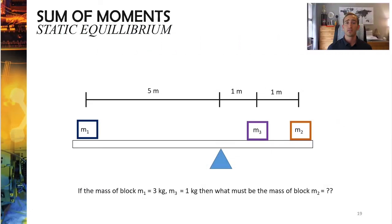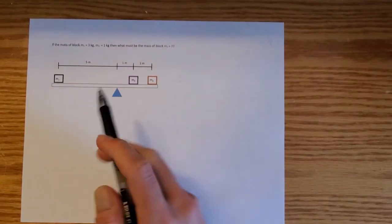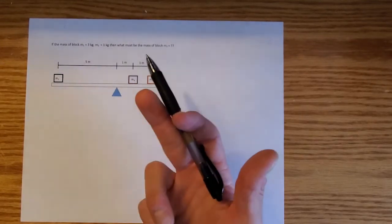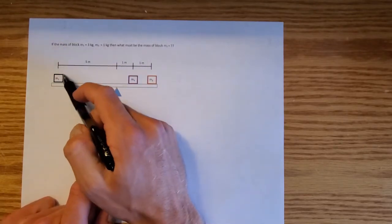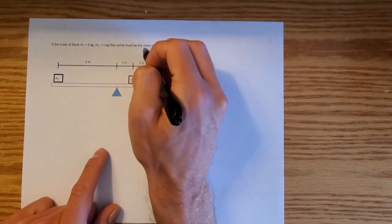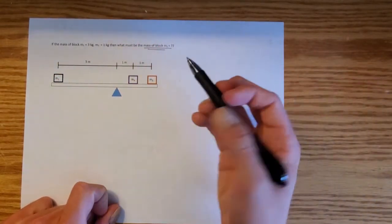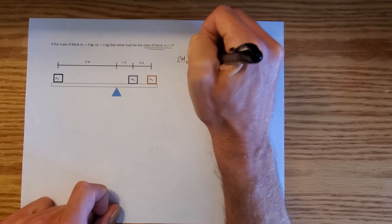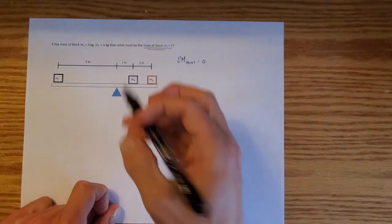Now we're going to do a slightly more advanced question involving three forces instead of just two, and use the sum of moments equation to calculate forces to keep the system at rest. We're told the mass of m1 is 3 kilograms, the mass of m3 is 1 kilogram, and we're asked to solve for the mass of block 2. We'll sum the moments about point A, the fulcrum, and set that equal to zero.